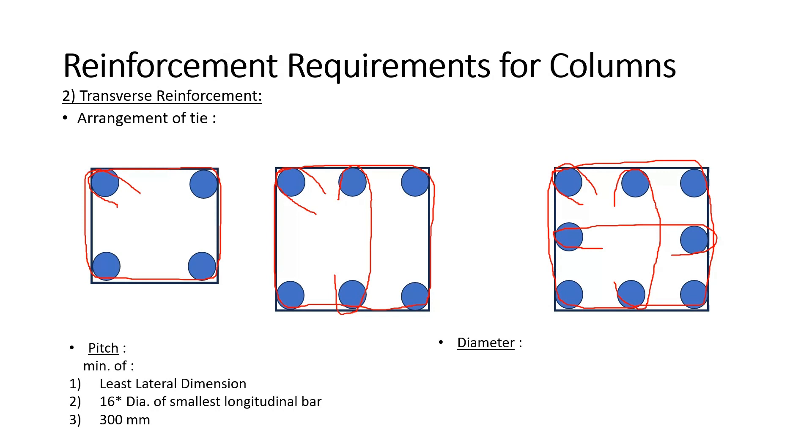And the dia of these lateral ties should not be less than 1 fourth times the largest longitudinal bar and it should not be less than 6 mm in any case.